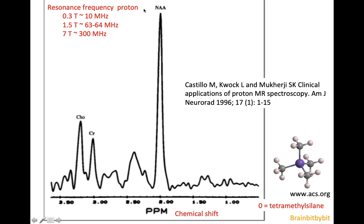The resonance frequency of the proton depends on the field strength, and to make spectroscopy images between different scanners more comparable, the frequency of the resonance is divided by the frequency that depends on the magnetic field. This gives you parts per million, which means that at two parts per million the NAA peak is always located independent of field strength. If you look at the x-axis you can see that it is inverted.